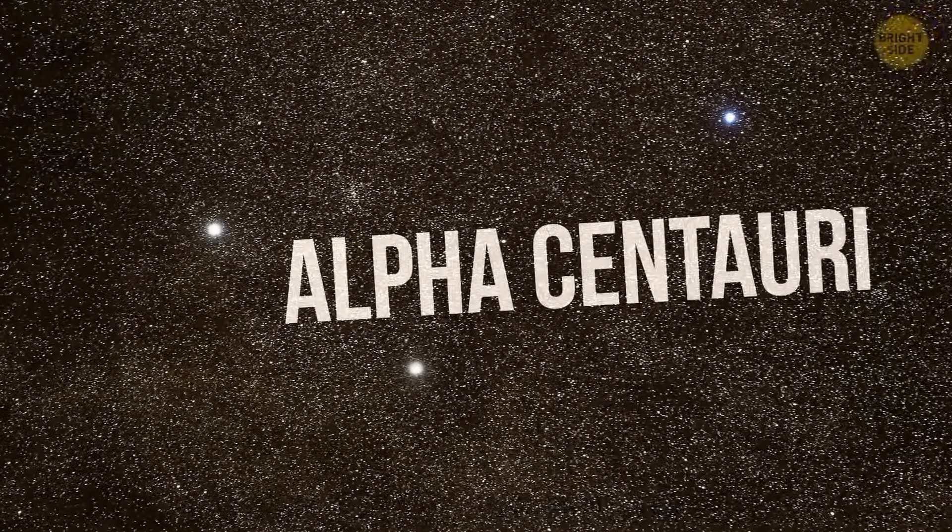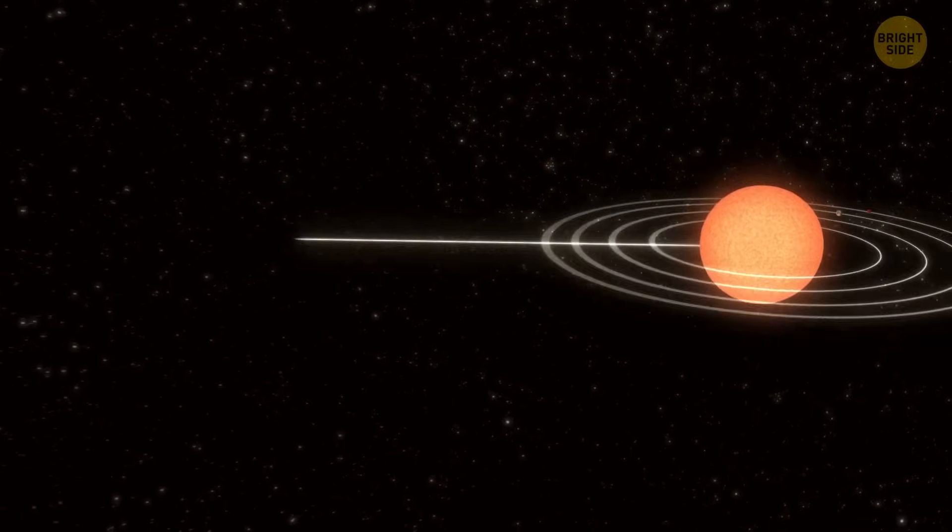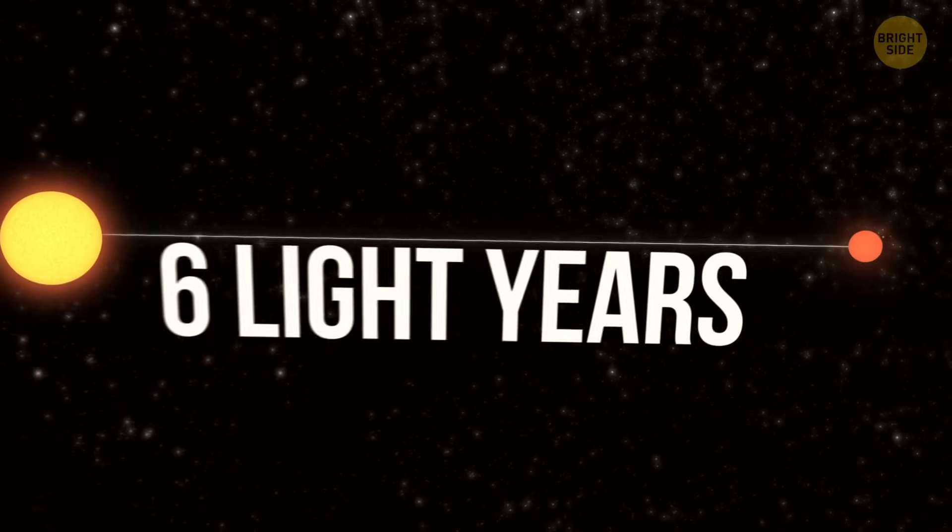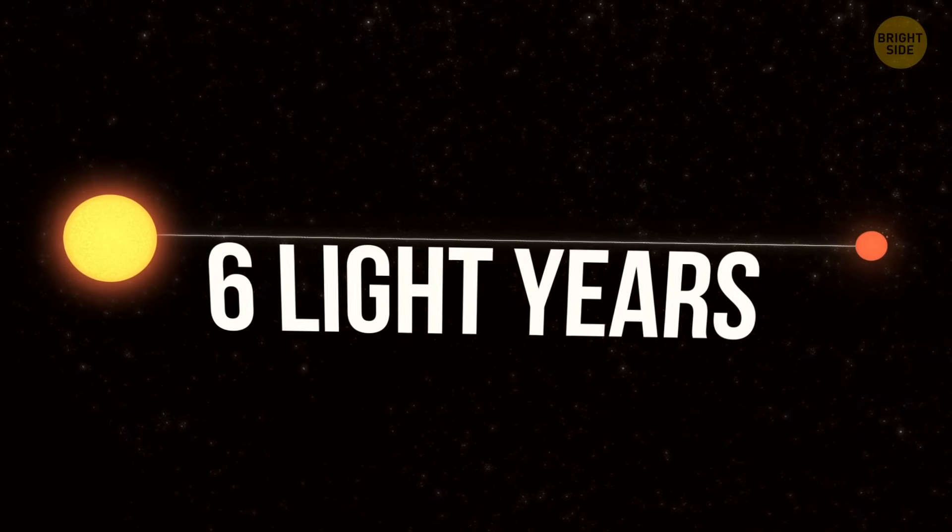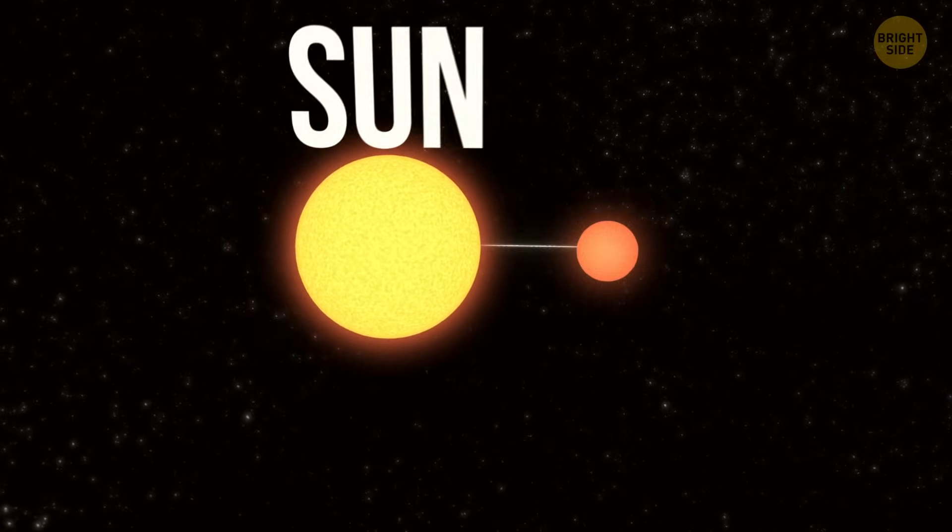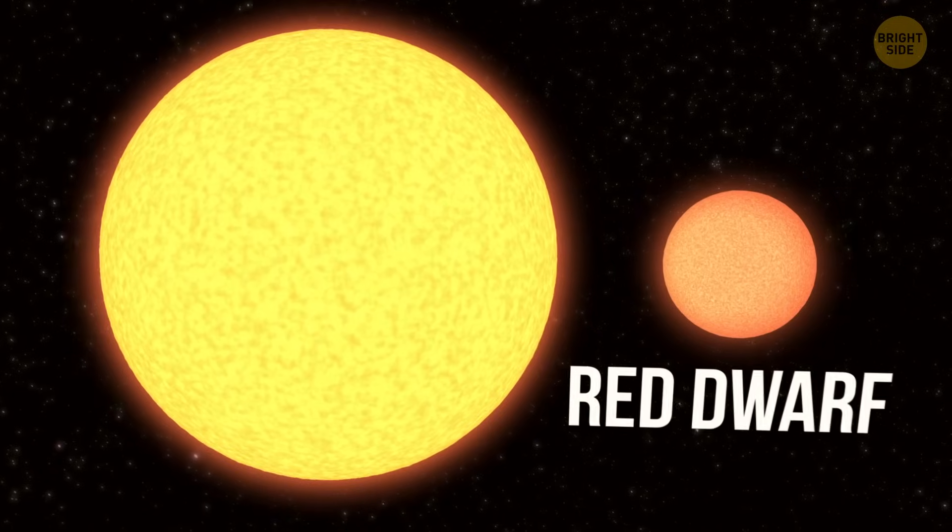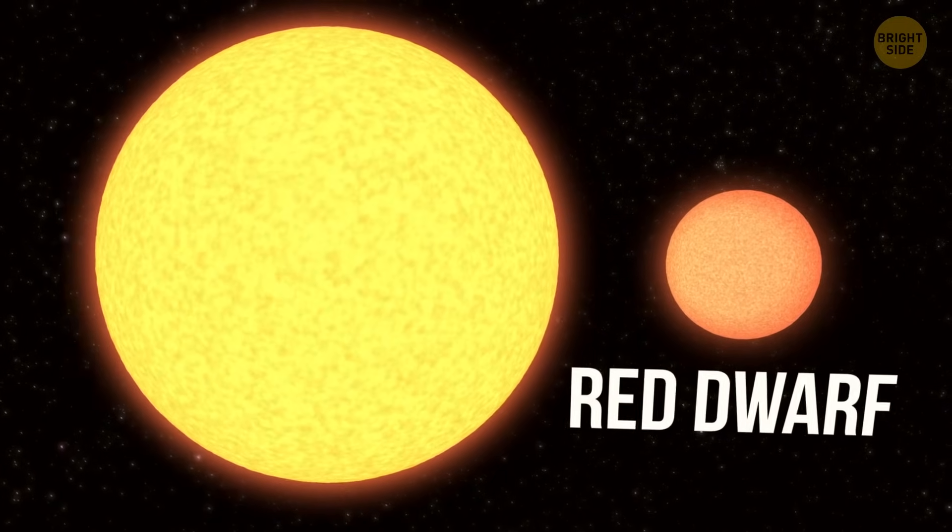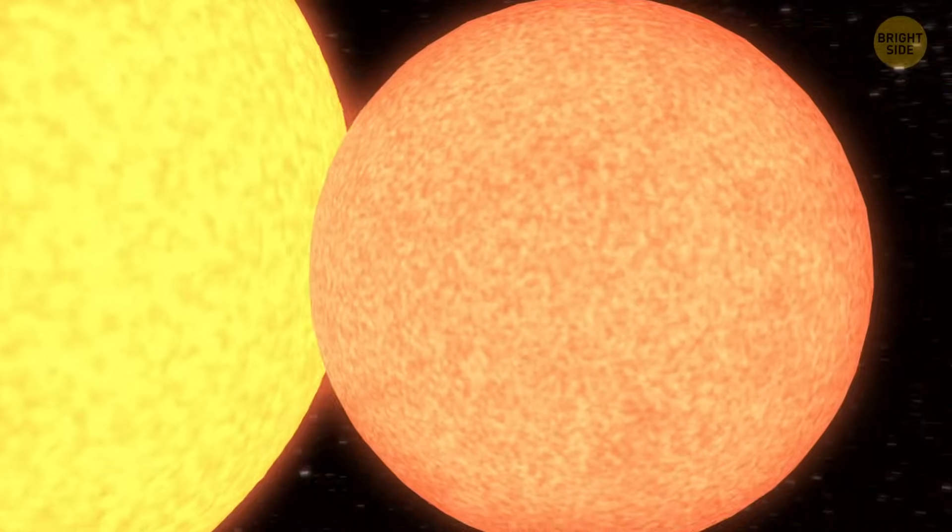Only the Alpha Centauri trio is closer to us. Barnard's star is just under 6 light years away, which is basically next door. At the same time, it's not like our sun. Barnard's star is a red dwarf, the most common kind of star out there.